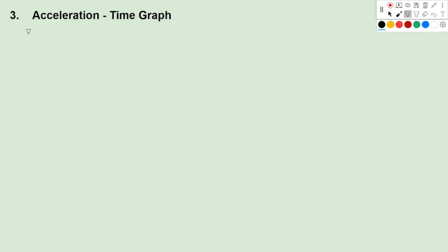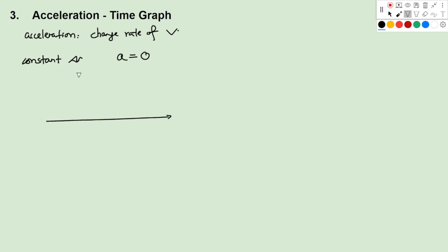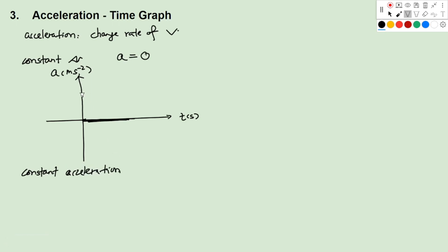So what is acceleration? Acceleration is the rate of change of velocity. If we have a constant velocity, that means velocity does not change, so the acceleration will be zero. When we draw this on the graph, with time on the horizontal axis and acceleration in meters per second squared on the vertical axis, this will be zero through all time. If the speed keeps increasing uniformly, the acceleration graph will be a positive constant. And if the speed keeps decreasing uniformly, the acceleration graph will be a negative number below the t-axis.